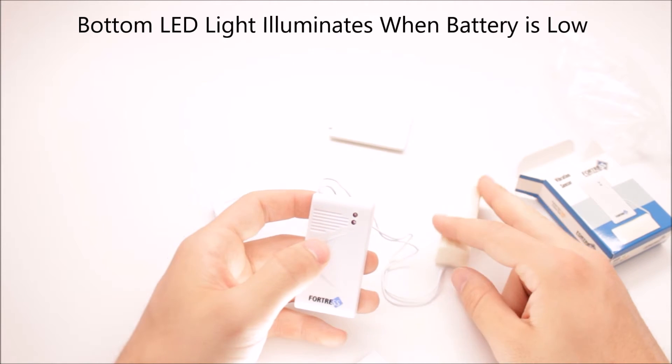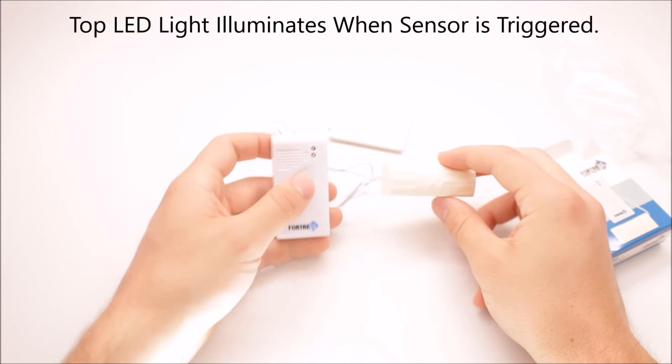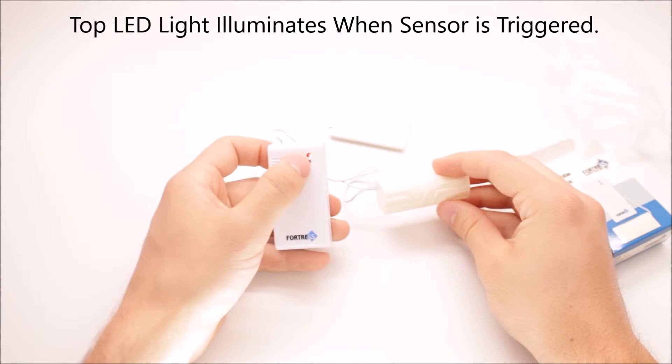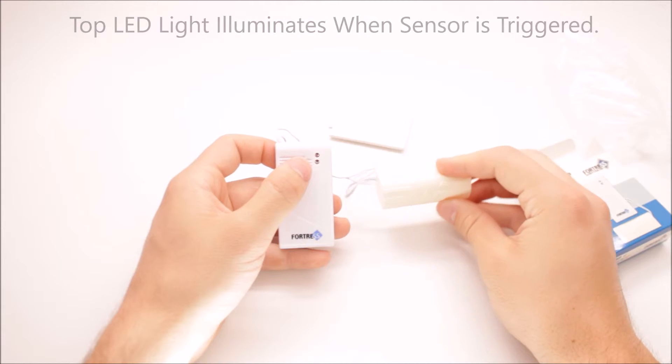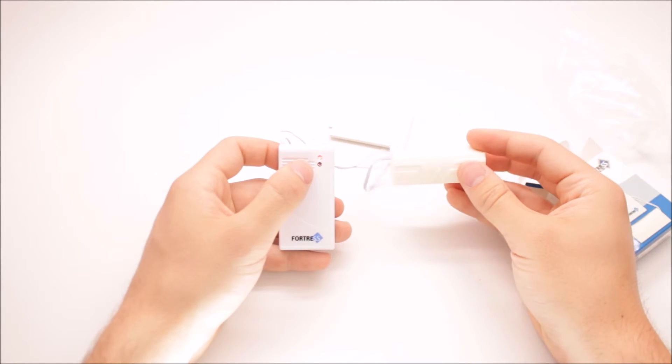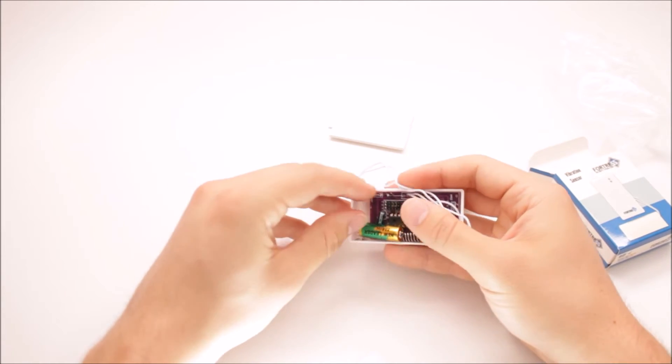That's the sure indicator the battery's going bad. The top LED light will illuminate every time that this sensor is triggered, and that's how you know that the signal is being sent. If I shake it like this, just a little bit, it's pretty sensitive.